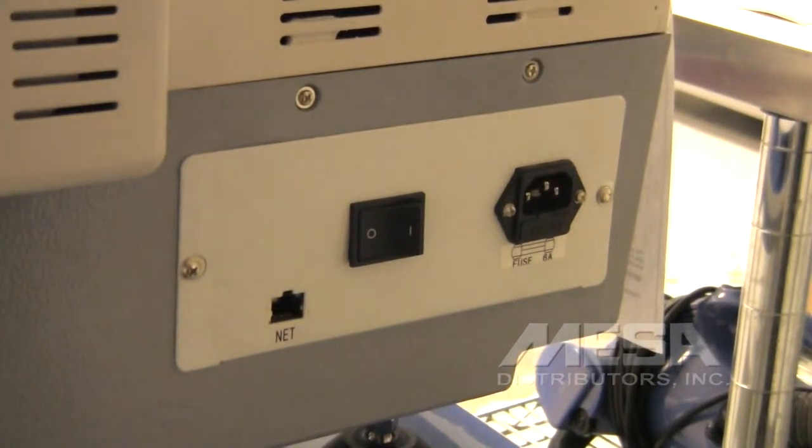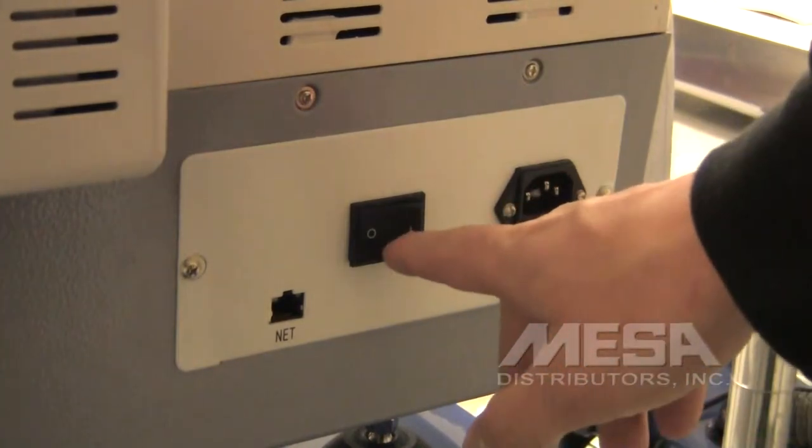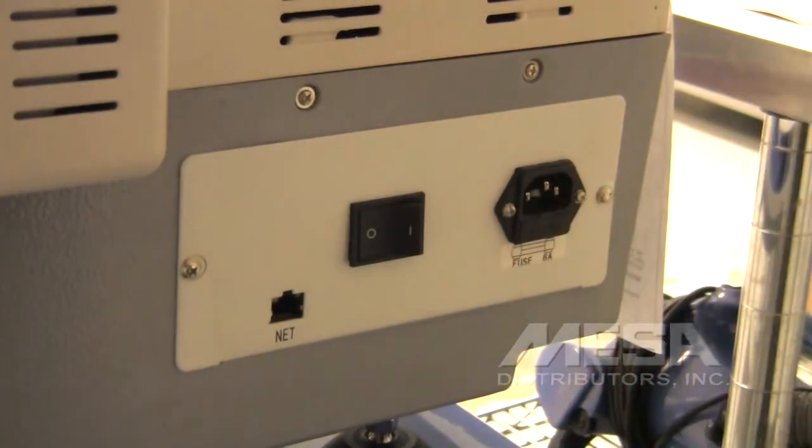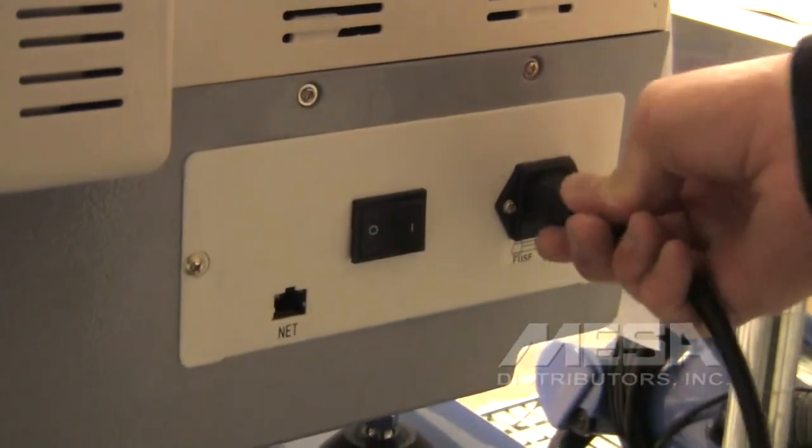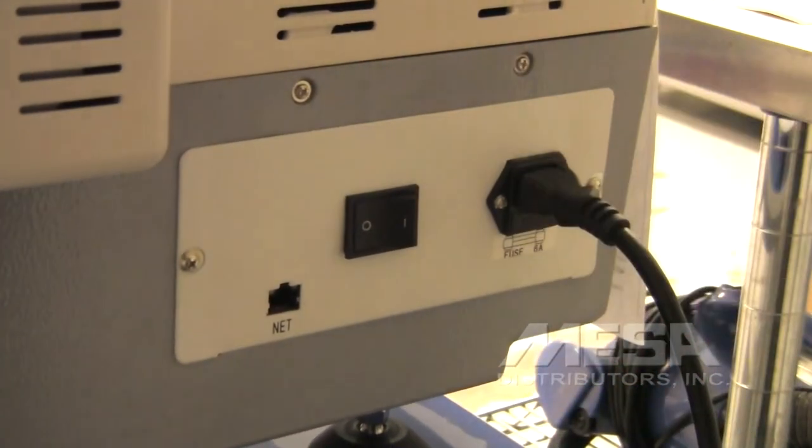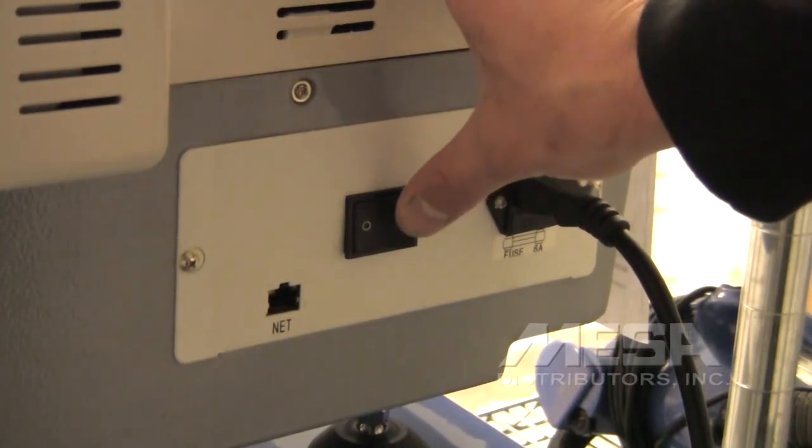Located on the back of your Hyland embroidery machine, you will find the power switch and the power plug. Simply put this end into the plug and the other end into the wall socket. After that is done, you will simply turn on the machine by pressing this button.